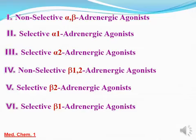هنشوف كل subclass من دول بالتفصيل. في عندنا drugs بتبقى non-selective على الالفا والبيتا، في drugs بتبقى selective على الالفا-1 بس، في drugs بتبقى selective على الالفا-2 بس، في drugs بتكون non-selective على beta-1 وبيتا-2، في drugs بتكون selective beta-2 فقط، وفي drugs selective بيتا-1.